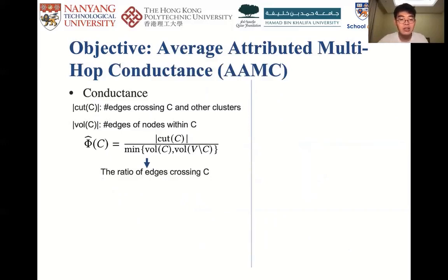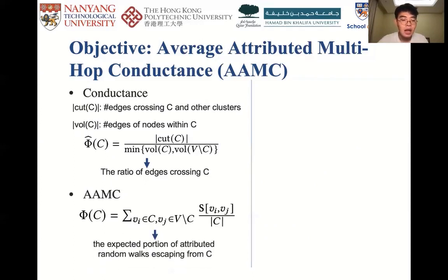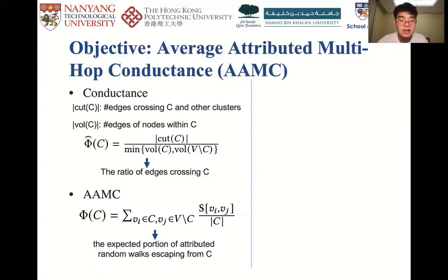Classic graph clustering methods use conductance to measure the quality of a cluster C. The conductance of cluster C is essentially the ratio of edges crossing cluster C and other clusters — it only considers one-hop edges. Inspired by this, we define the Average Attributed Multi-hop Conductance (AAMC). The attributed multi-hop conductance is defined as the expected portion of attributed random walks escaping from cluster C, if we conduct a large number of attributed random walks from nodes in cluster C. AAMC is the average attributed multi-hop conductance of all clusters in the graph.